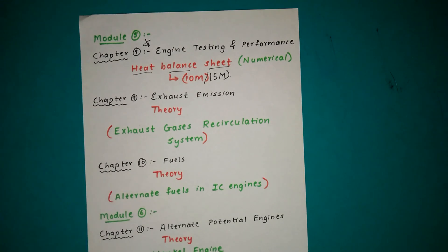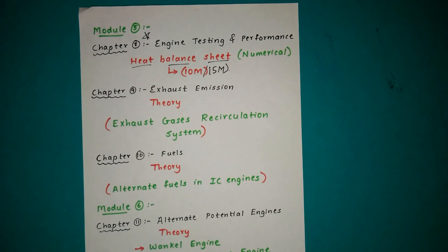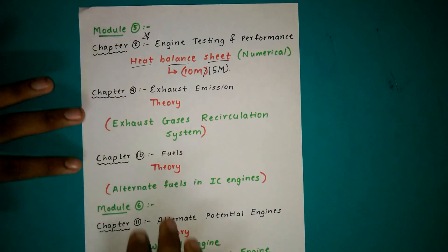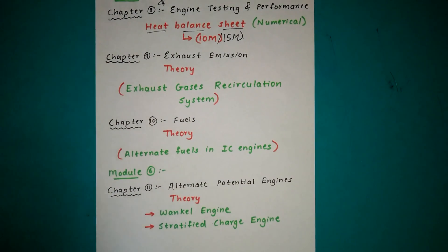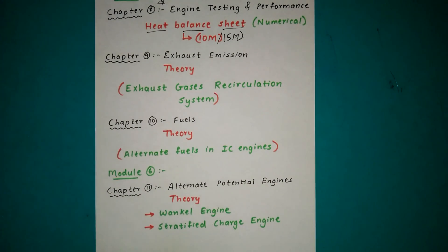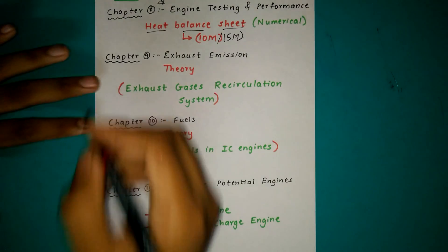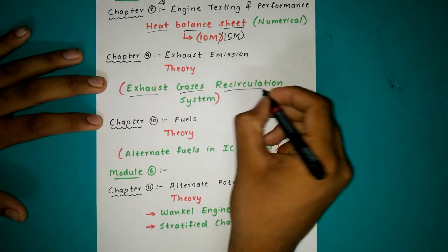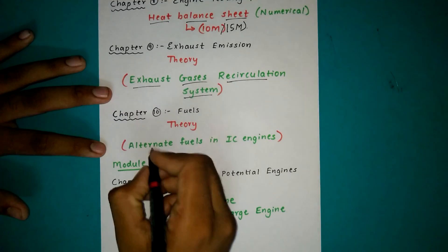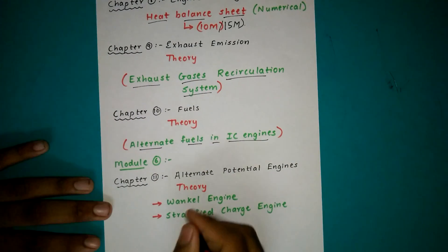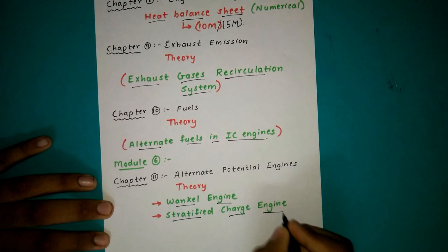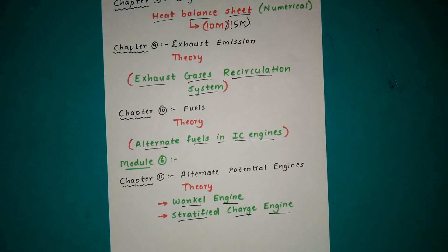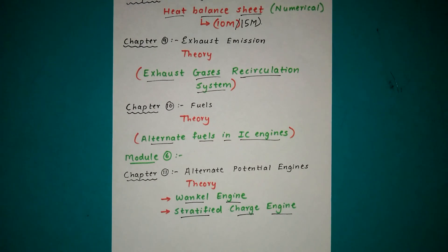Then comes Chapters 9, 10, and 11. These three chapters are theory chapters. From these chapters the theory is asked many times, but the theory is not repeated mostly. However, exhaust gases circulation system, alternate fuels in IC engines, Wankel engine, and stratified charge engine—these questions are mostly repeated.